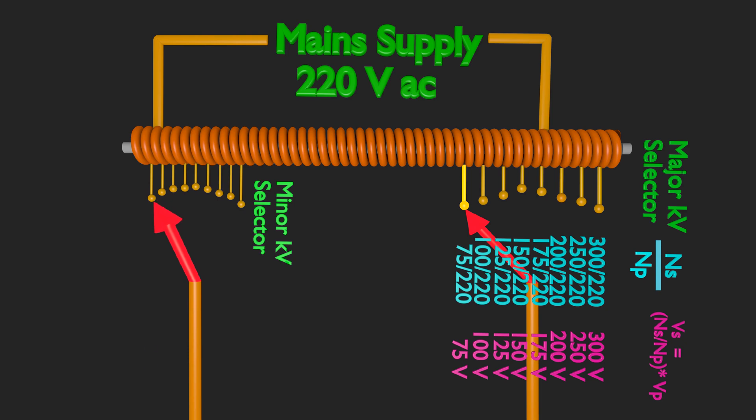Let's assume that the turn ratio for last taping of minor selector is such that it produces a voltage of 1 volt across secondary. The final voltage across secondary will be voltage due to major selector plus voltage due to minor selector. That is in our current situation, 75 volts due to major and 1 volt due to minor selector, both adding to a voltage of 76 volts.